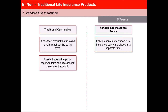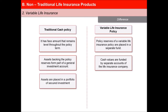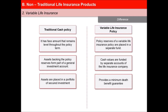Whereas in variable life insurance policy, the cash values are funded by separate accounts of the life insurance company. Death benefits and cash values vary to reflect investment experience. In traditional cash policy, the assets are placed in a portfolio of secured investments, whereas variable life insurance policy also provides a minimum death benefit guarantee for which the mortality and expense risks are borne by the insurance company.